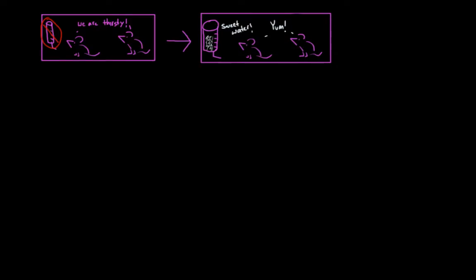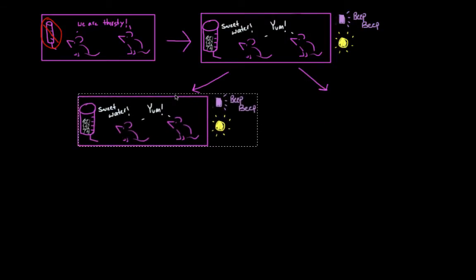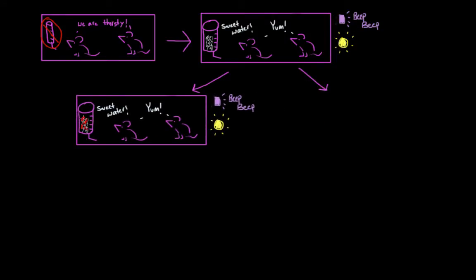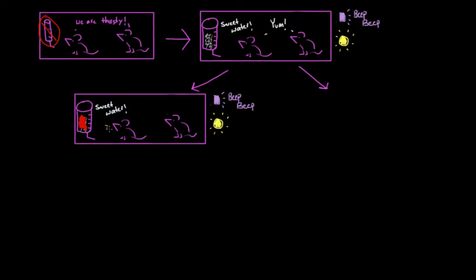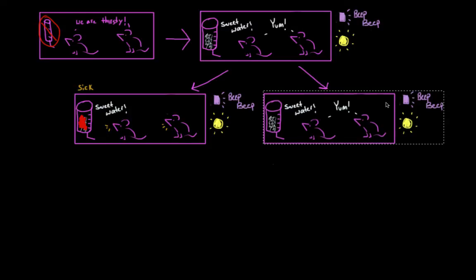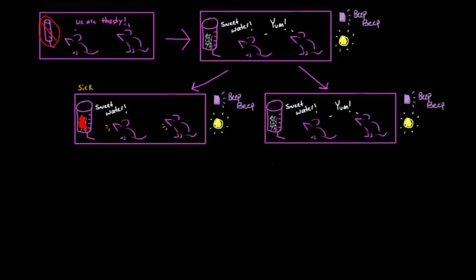And when the rats go to drink this very exciting sugar water, a tone sounds and a light flashes. And these things all happen at the same time. So these rats actually belong to two different groups. For the first group, a tasteless, odorless substance has been added to the sugar water that's going to make them violently ill. It's going to make them physically ill. The other group has not been given this substance. They just have plain sugar water.